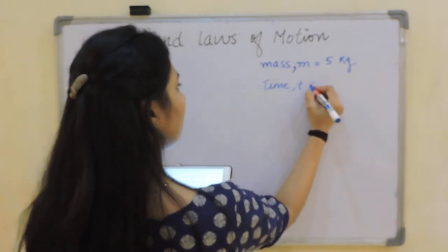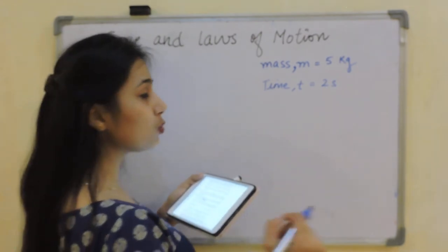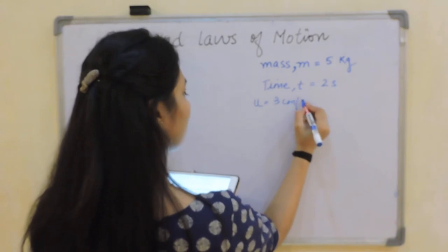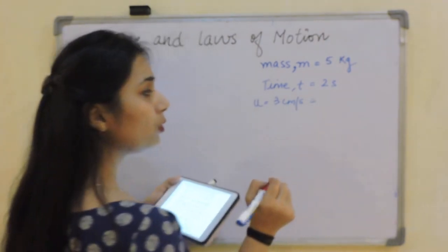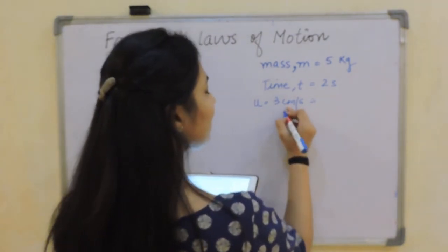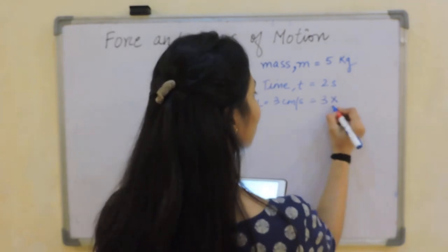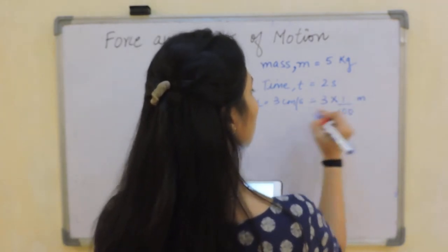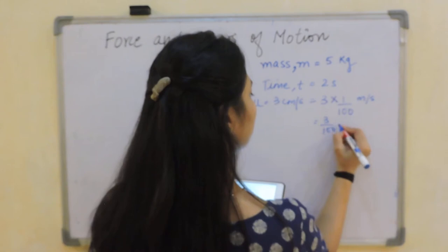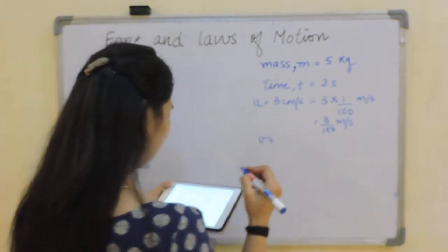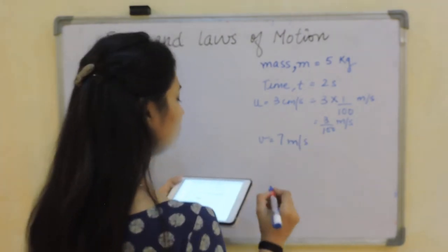The initial velocity is 3 cm/s. Since 1 meter = 100 cm, dividing by 100 gives 3/100 m/s. Final velocity V = 7 m/s. Now check — both units are in m/s. Using F = MA = M(V - U)/T: F = 5 × (7 - 3/100) / 2. Taking LCM gives (700 - 3)/100 = 697/100 = 6.97. So F = 5 × 6.97 / 2 = 17.43 Newton.